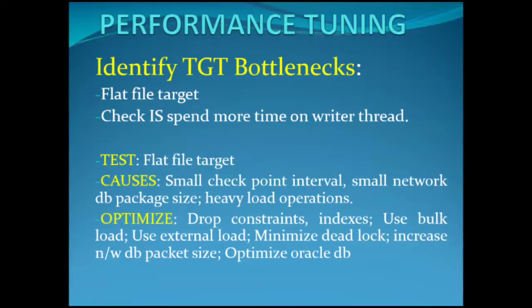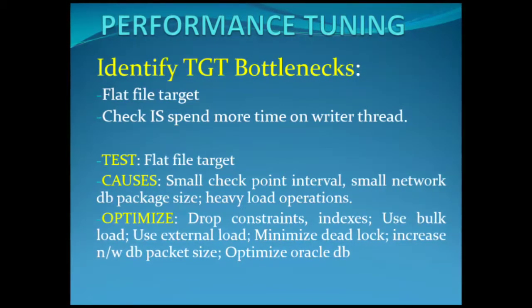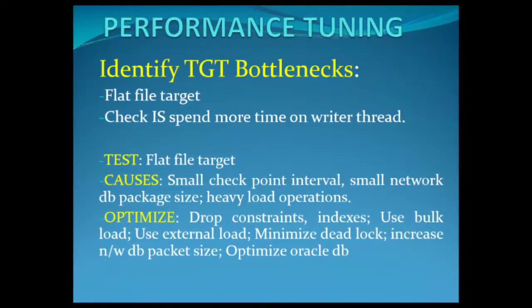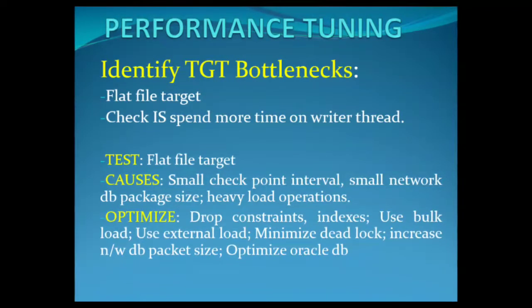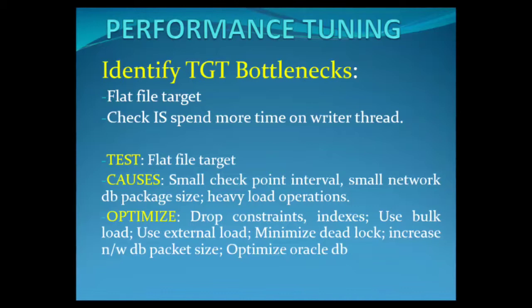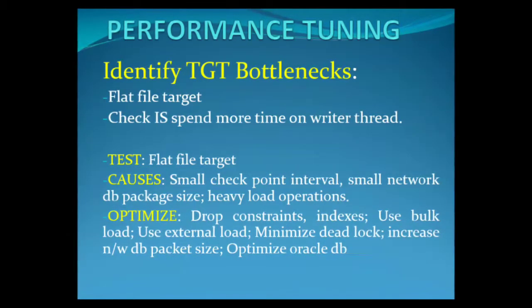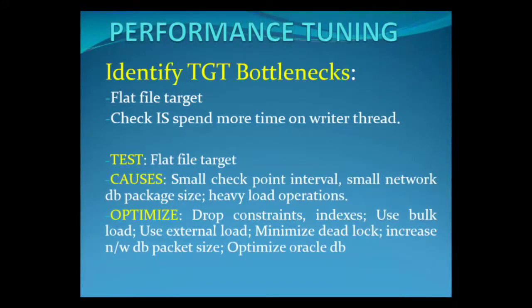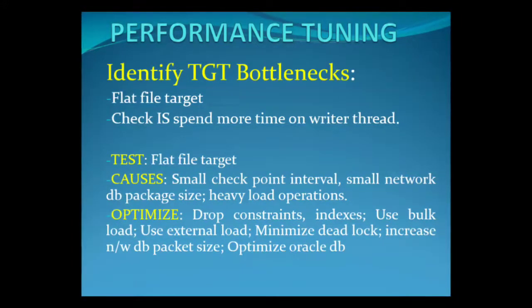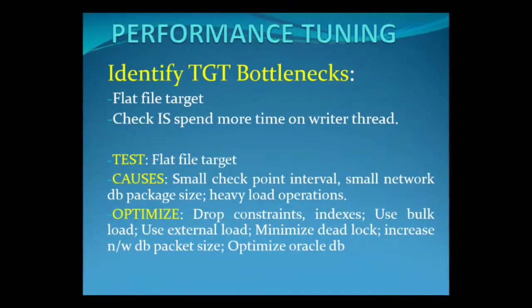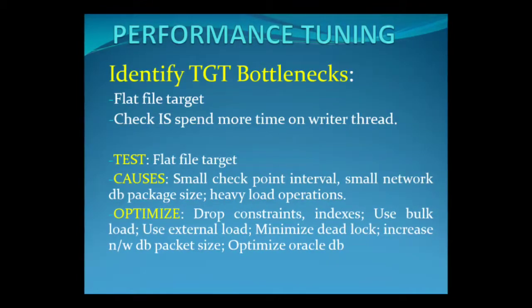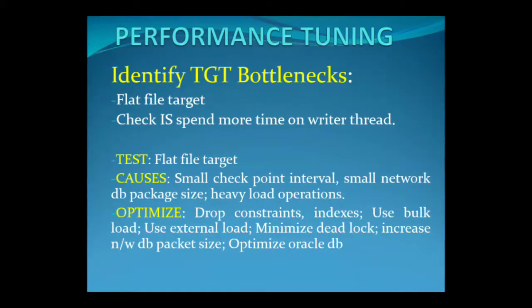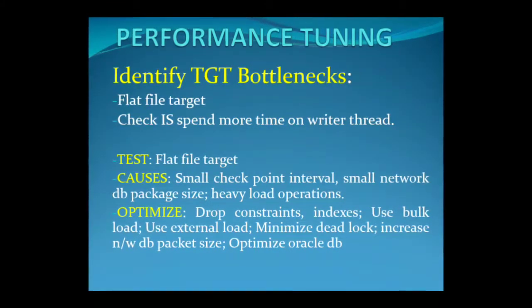Once source performance is optimized, identify target bottlenecks by configuring a copy of the session to write to a flat file target instead of a database target. If session performance increases significantly, you have a target bottleneck. If your target is already a flat file, you likely have no target bottleneck. You can also read thread statistics — when the Integration Service spends more time on the writer thread than the transformation or reader thread, you have a target bottleneck.